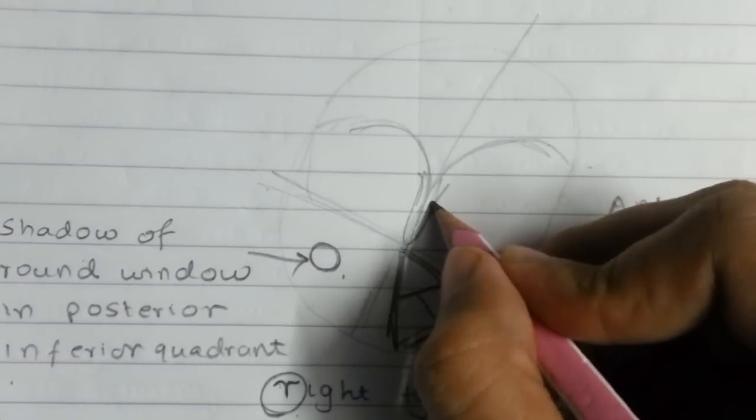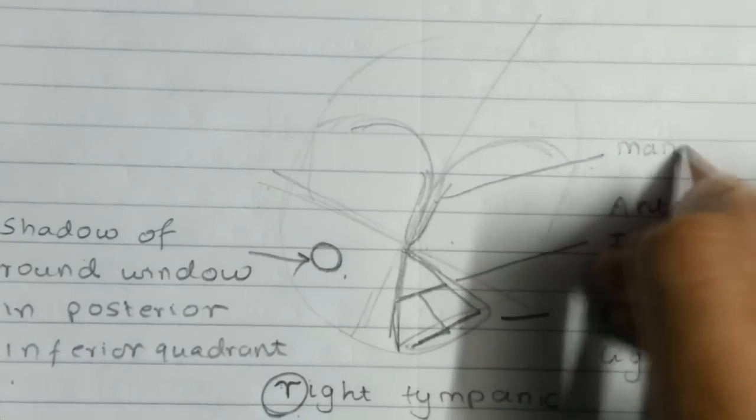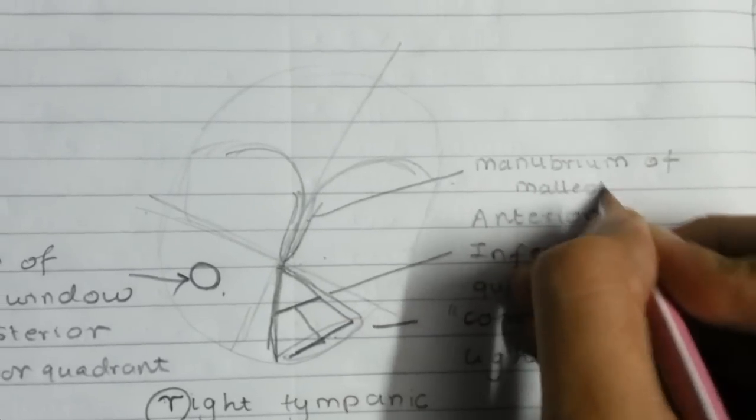Now I'm drawing the manubrium or the handle of the malleus which is attached to the upper half of the tympanic membrane.